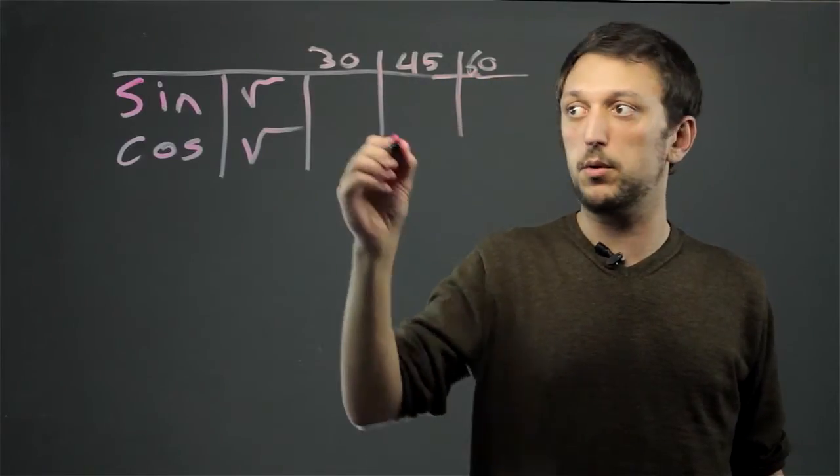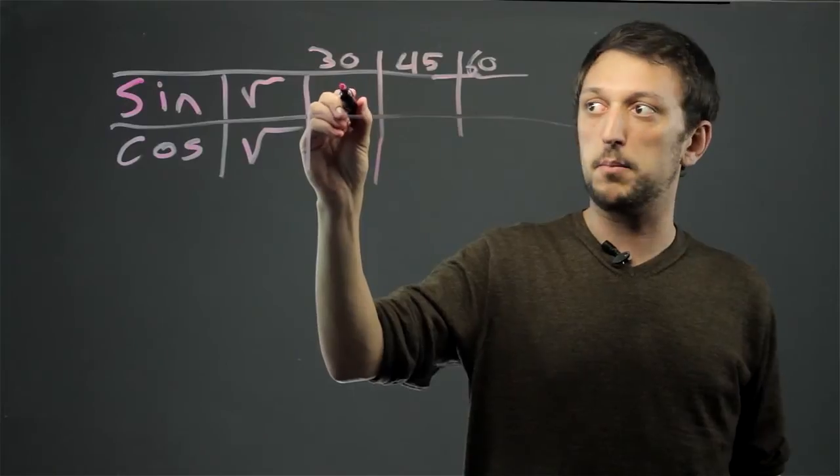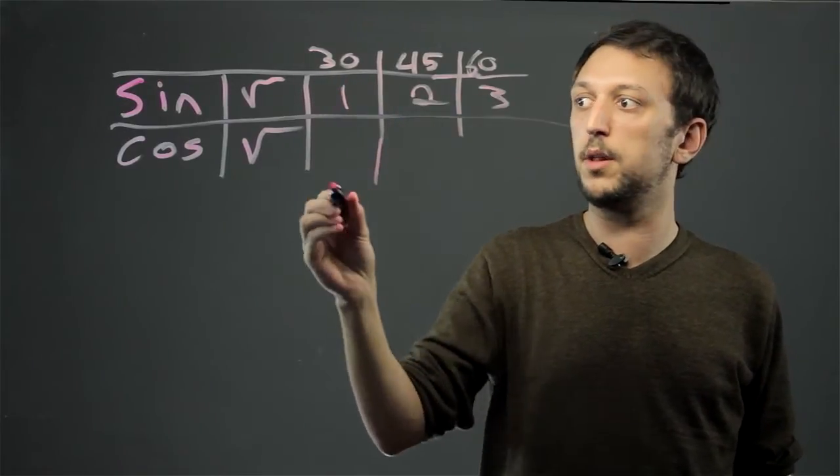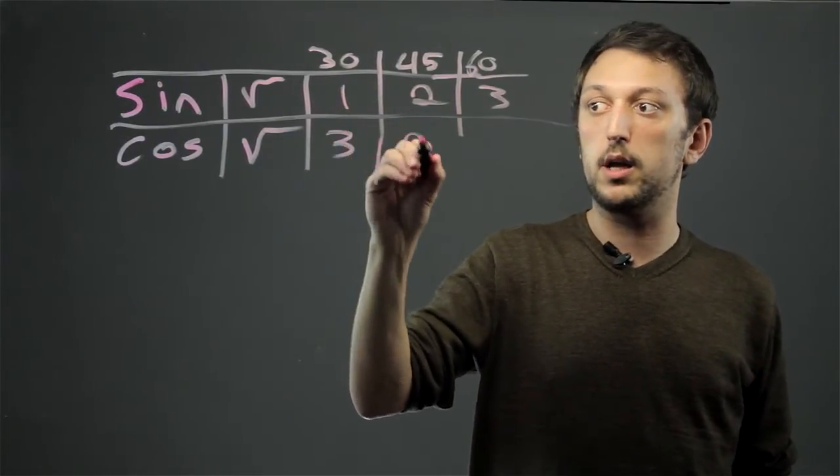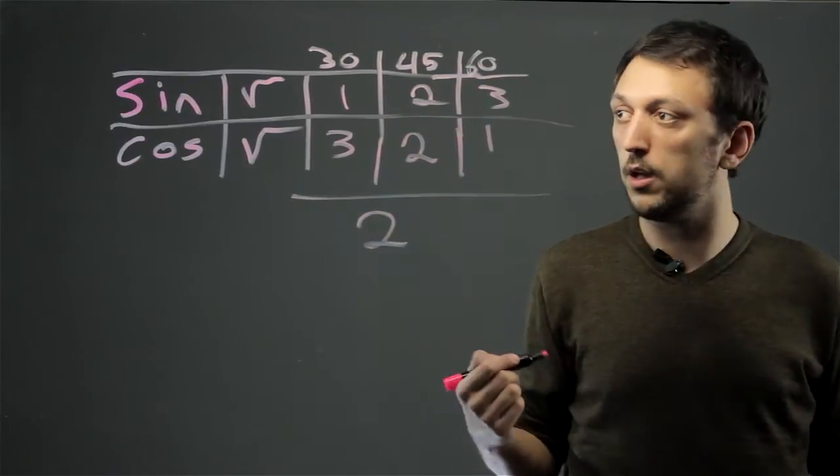And it's very simple. With your sine, you're counting up 1, 2, 3. With your cos, you're counting down 3, 2, 1. And then you just divide by 2.